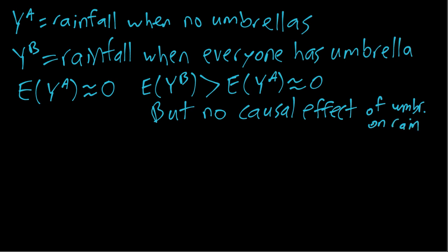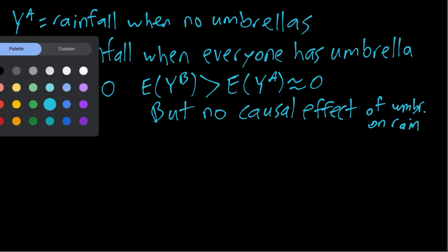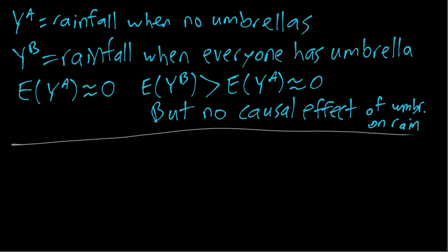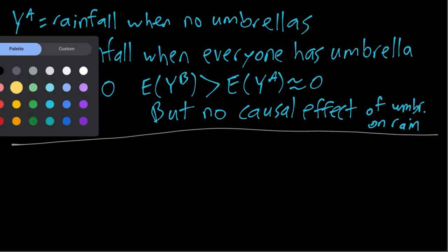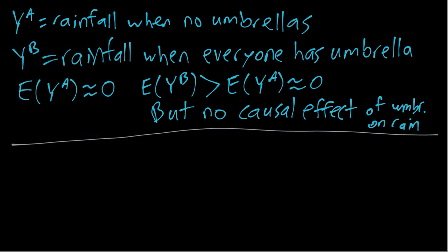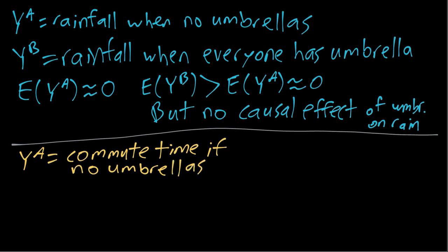That's our first example. The second one is somewhat similar in that A and B is again related to umbrellas, but this time Y^A is somebody's commute time, the commute time if there are no umbrellas being carried outside, and then Y^B is the commute time when everyone has an umbrella.